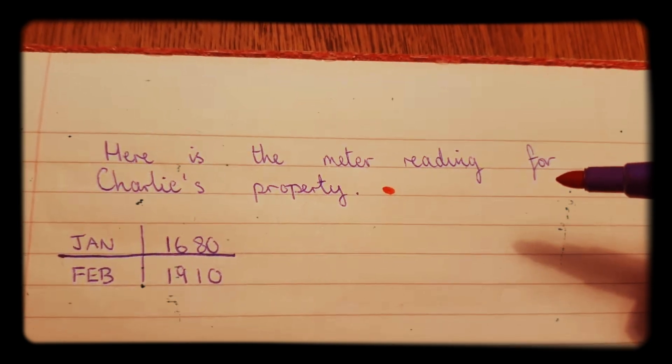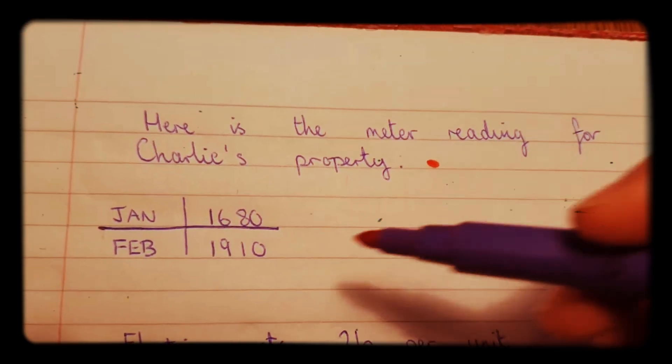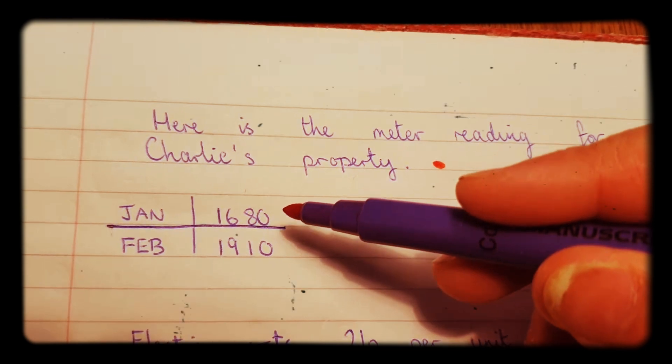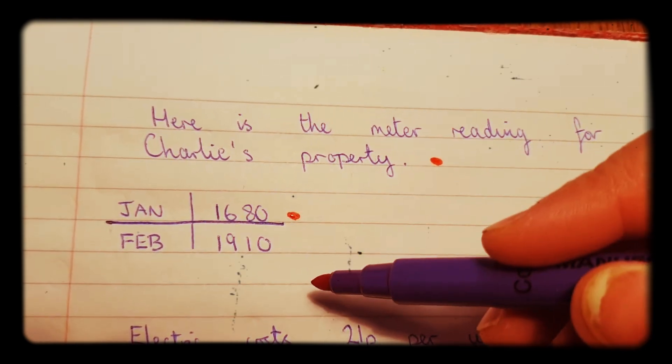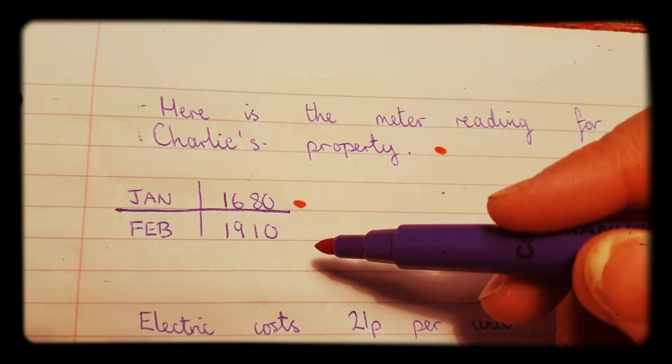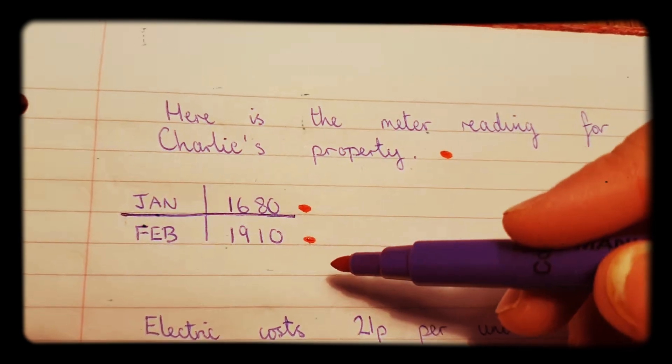This could be electric or gas or something like that. In January the meter read 1680, and in February it read 1910.